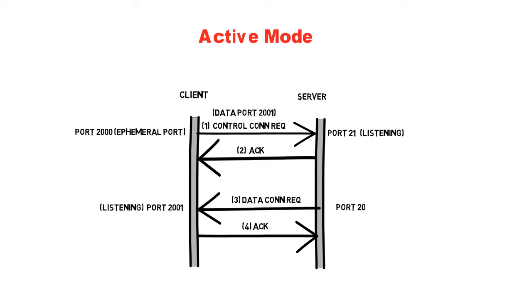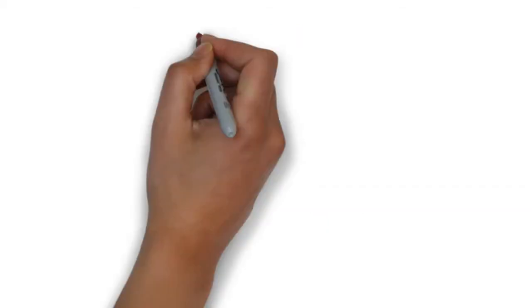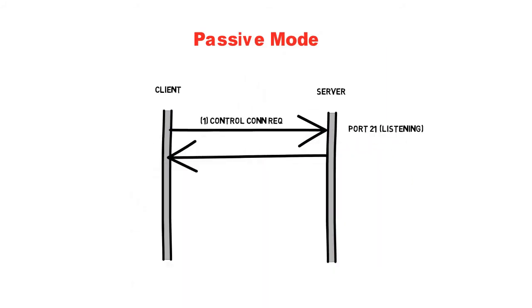The server acknowledges, then the server creates a data connection. The server uses port 20 for the data connection, and the client will be using the port number which it has sent to the server along with the control connection request. Then the client acknowledges.